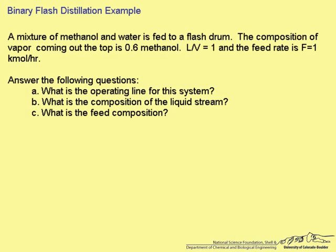This example solves a binary flash distillation problem. A mixture of methanol and water is fed to a flash drum. The composition of vapor coming out of the top is 0.6 methanol. The L to V ratio is 1, and the feed rate F is 1 kilomole per hour.